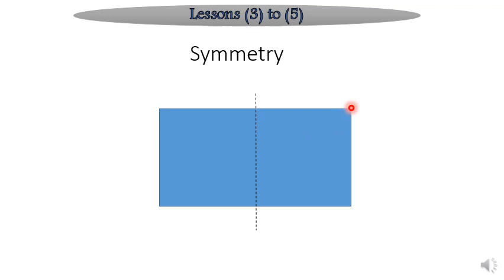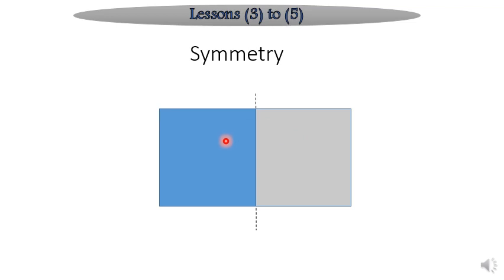لو جينا طبقناهم على بعض، هتلاقي أن الـ corner اللي هنا لو طبقناه هيروح على الـ corner ده. وده معناه أن دول بقوا زي بعض. لو عملنا fold هتلاقي دول هيروح داخل الناحية دي، وهيطلعوا same shape. يبقى symmetry معناها ان دول لازم يكونوا زي بعض بالزبط. أول ما ترسم الـ line، لو جيت عملت لهم fold، لازم الـ corner اللي هنا ييجي على الـ corner ده، ما يعديهوش.